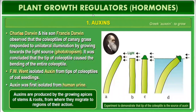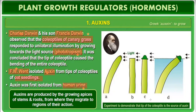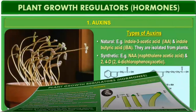Please star mark these important points: Charles Darwin, Francis Darwin, phototropism, F.W. Went, and auxin from human urine. This experiment demonstrates that the tip of the coleoptile is the source of auxin, which is named the source of auxin in plants — the tip of the coleoptile and coleorrhiza.